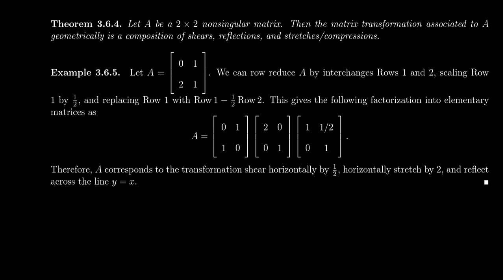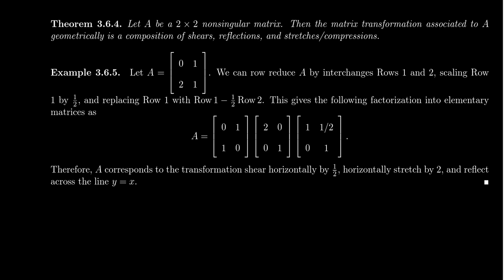Summarizing what we've learned so far about multiplication by 2x2 non-singular matrices, we've seen there were a couple different transformations we could do. We could get a shear when we multiplied by a unit upper triangular or lower triangular matrix.